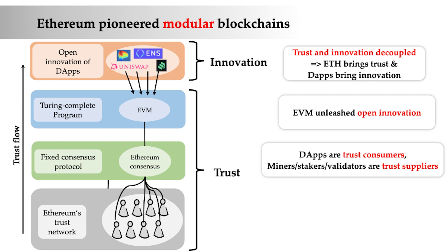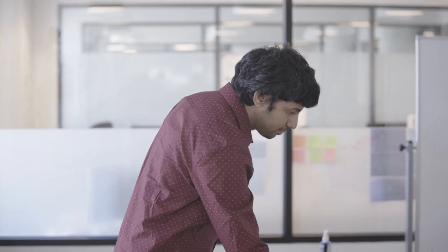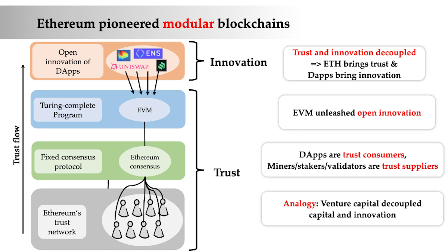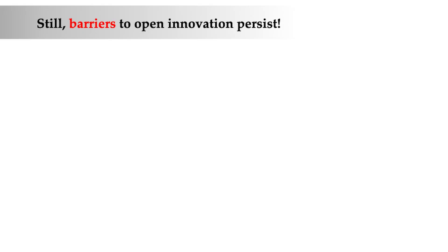By creating this new economy where trust and innovation got decoupled, many more things became possible that were simply impossible in the previous era. Just one high-level analogy: just like venture capital was a massive innovation — the decoupling of capital and innovation — Ethereum decoupled trust and innovation. I don't need to be trusted; I just bring the innovation. Ethereum brings the trust, and together we can create a product. But the barriers to open innovation continue to persist.